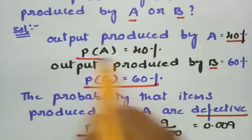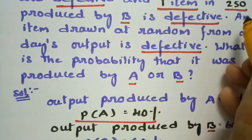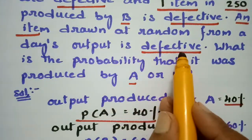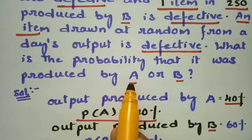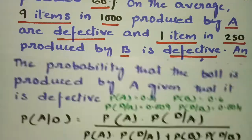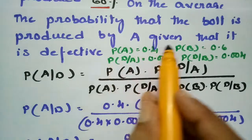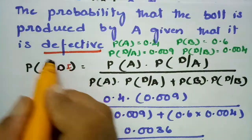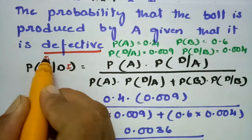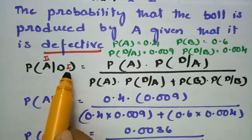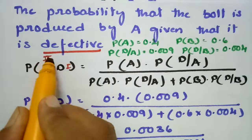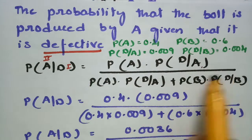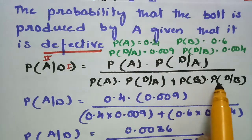These are the four values we have to substitute. The question asks: an item drawn at random from the day's output is defective — it is already defective — and what is the probability that it is from machine A or machine B? The probability of A given D, we have to find. That is P(A|D) equals P(D|A) times P(A) divided by P(A) times P(D|A) plus P(B) times P(D|B), according to Bayes theorem.